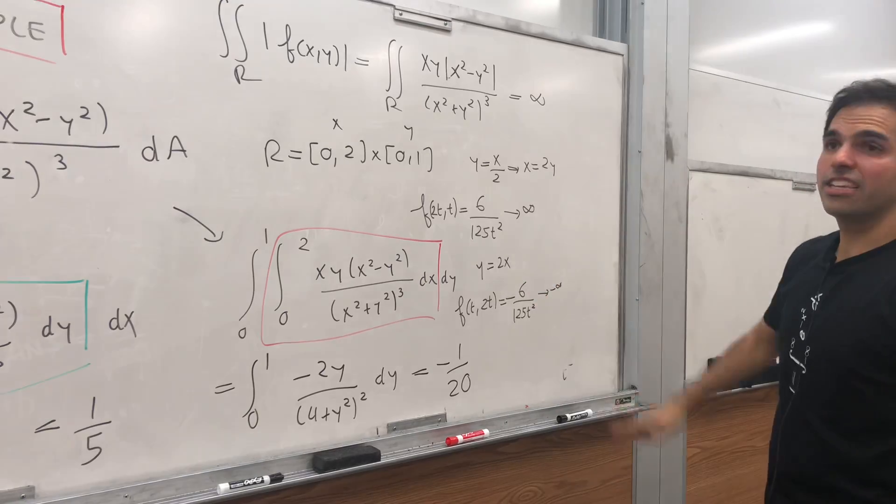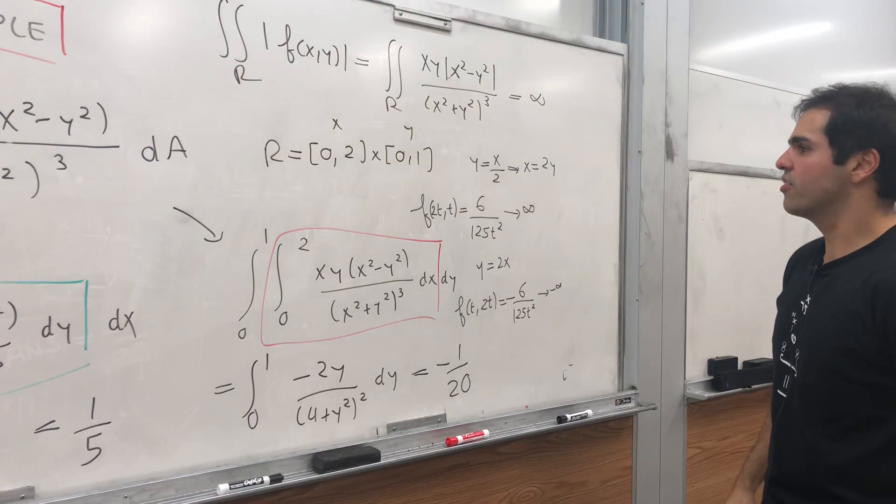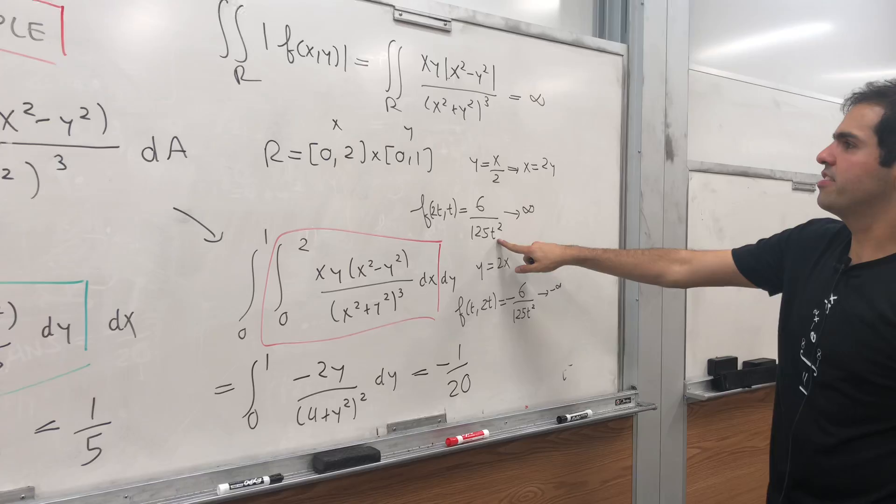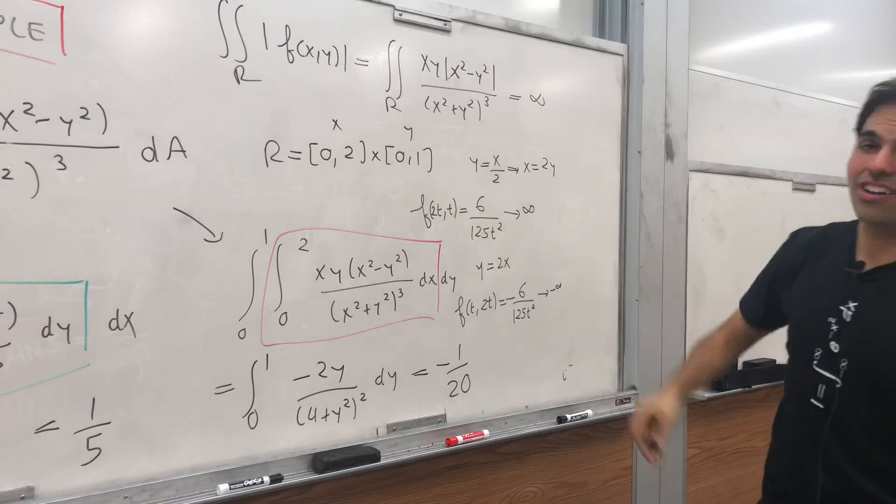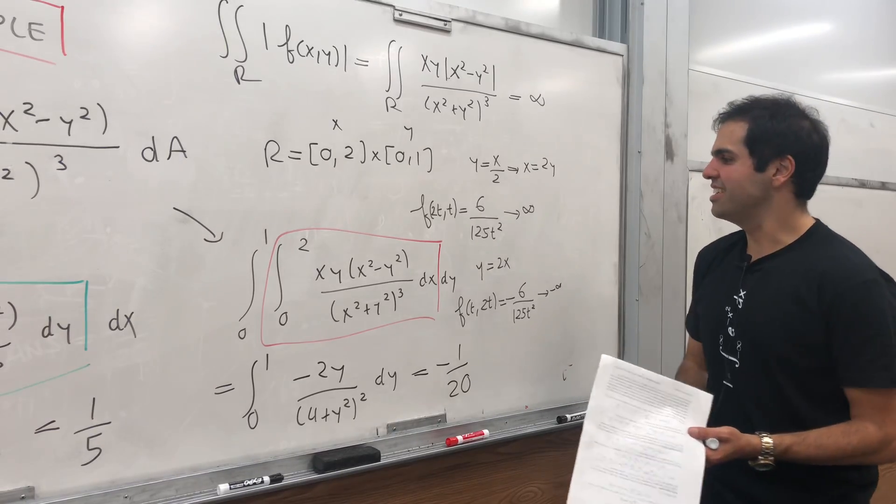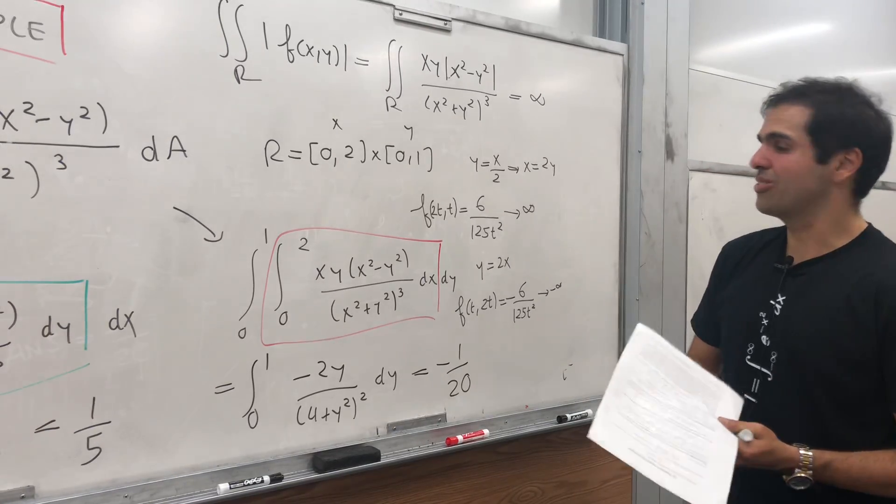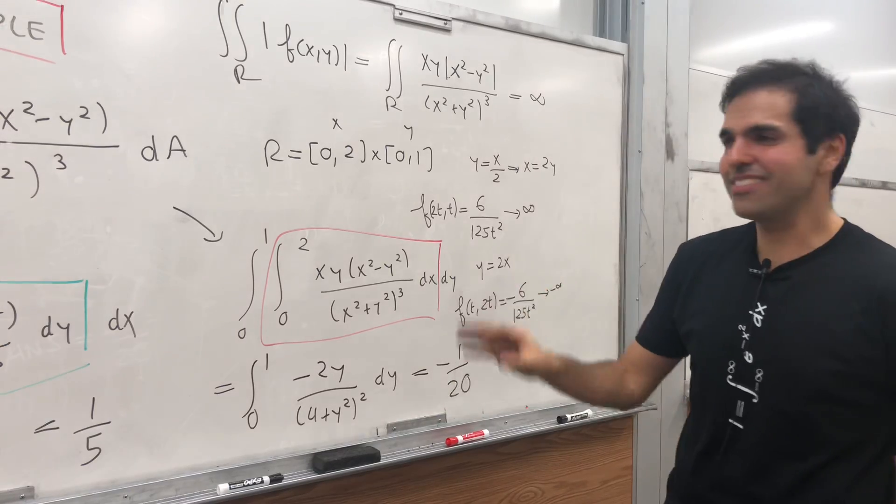Now, just because it blows up doesn't mean it's not integrable, but notice precisely this exponent is t squared. So because of this exponent, the function actually blows up as t goes to 0 plus. And that's why that's so interesting.